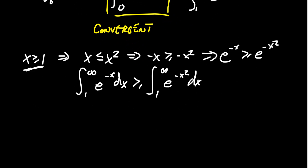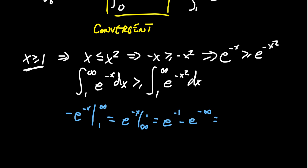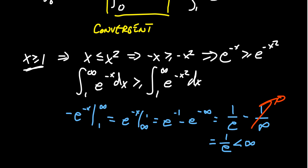The one on the left we can calculate — the antiderivative of e to the negative x is going to be negative e to the negative x. Evaluating from one to infinity, we can reverse the order: that's going to be e to the negative x evaluated from infinity to one, giving us e to the negative one minus e to the negative infinity, or one over e minus one over infinity. Dividing by infinity is the same as going towards zero, so we get that this integral is one over e, which is in particular a finite value. This tells us the integral from one to infinity of e to the negative x dx is a convergent integral.